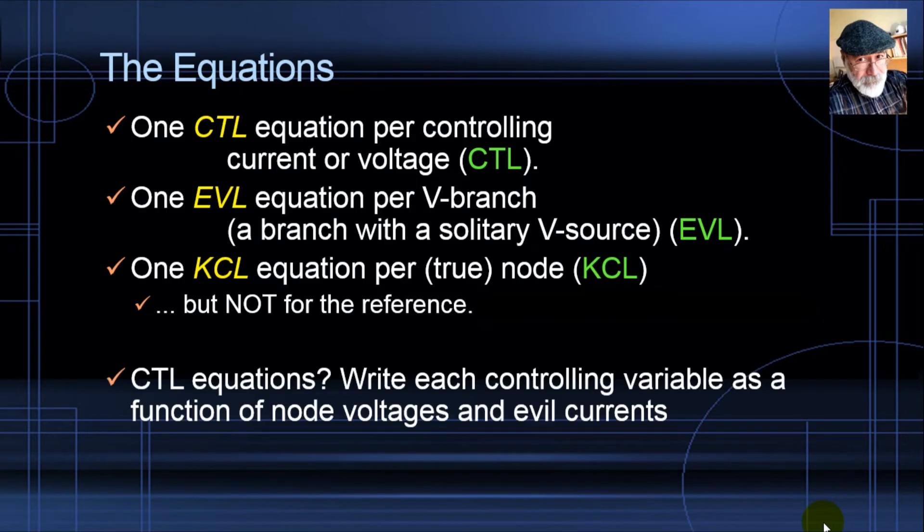And we begin like that. One control equation for every controlling current or voltage. One evil equation for every evil branch. One KCL equation for every true node, but never for the reference. And you're thinking, I know what a KCL equation is, I know what an evil equation is, it's a KVL: V plus is equal to V minus plus the value of the source in the evil branch. But what are those CTL equations? Well, we write each controlling variable as the function of node voltages V1, V2, etc., and of all the evil currents, I evil A, evil B, etc. Those are controlling equations, CTL equations.